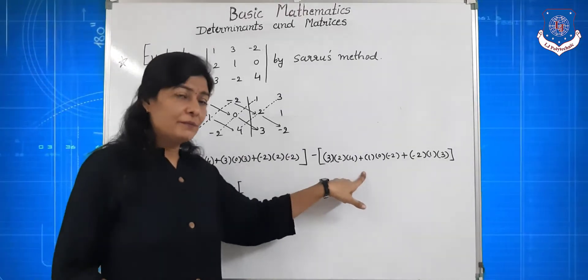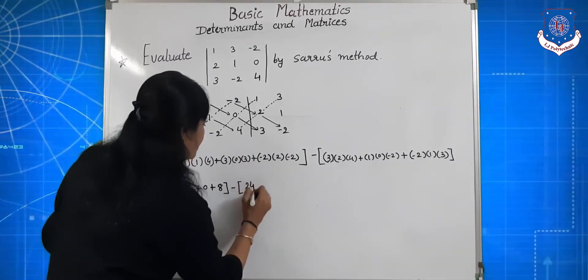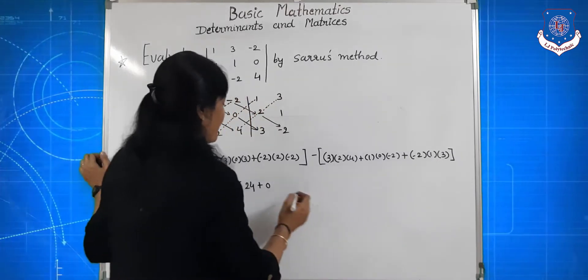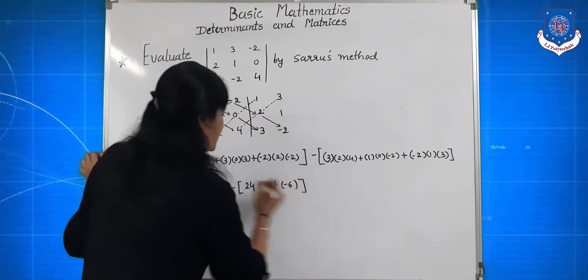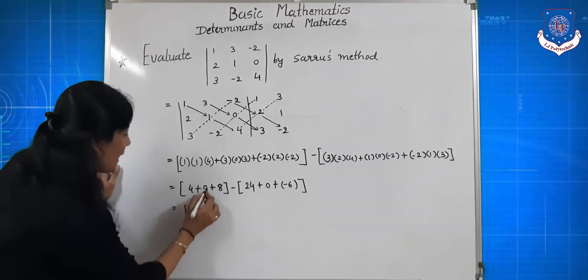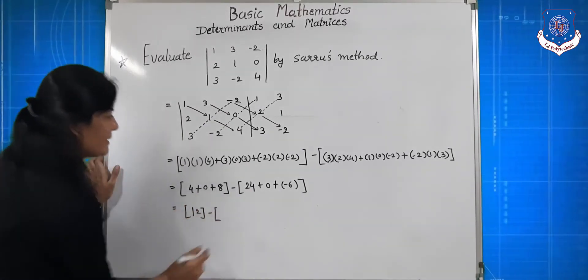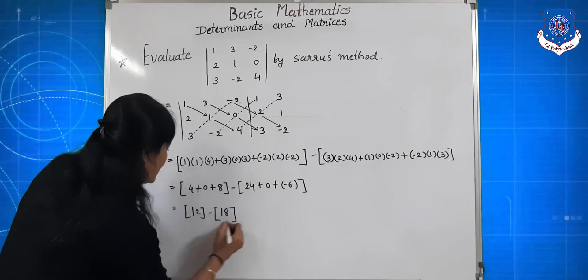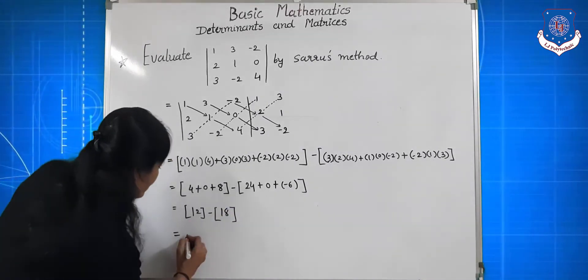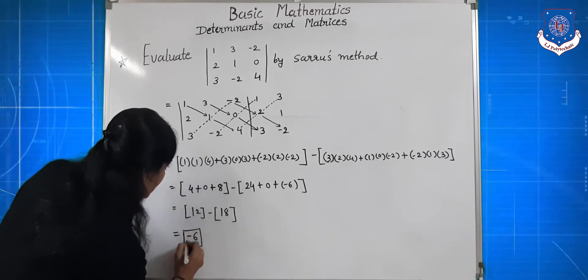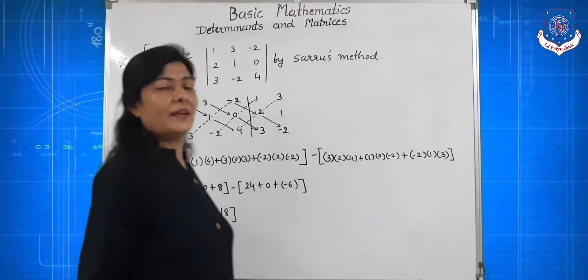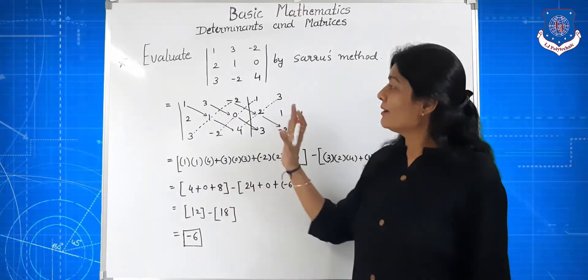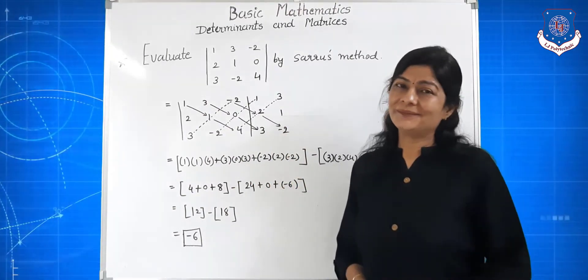Equal to: first bracket = 4 plus 0 plus 4 = 8 plus 4 = 12. Second bracket = 24 plus 0 minus 6 = 18. So 12 minus 18 = minus 6. To yeh jo hai, is method se bhi answer same aaya — minus 6. To is method se bhi aap third order determinant ki jo value hai, wo find kar sakte hain.